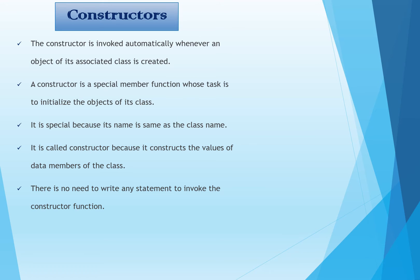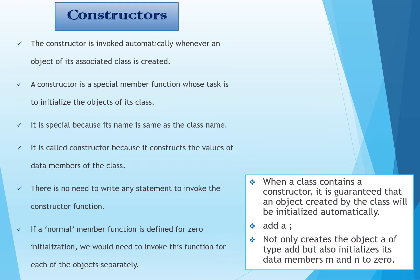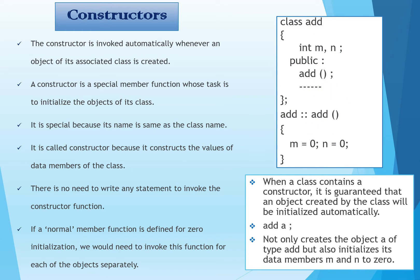It is called a constructor because it constructs the values of data members of the class. There is no need to write any statement to invoke the constructor function. When a class contains a constructor, it is guaranteed that an object created by the class will be initialized automatically. For example, if there is a class 'add' with data members m and n, the constructor named 'add' initializes m and n to zero, so the object not only gets created but its data members are also set to zero.